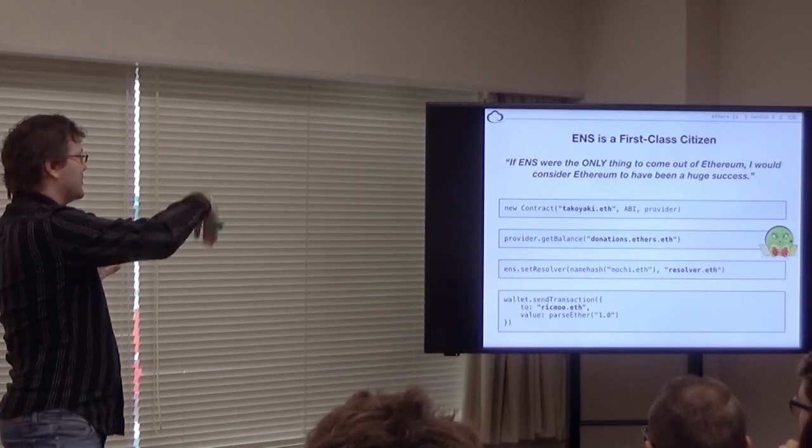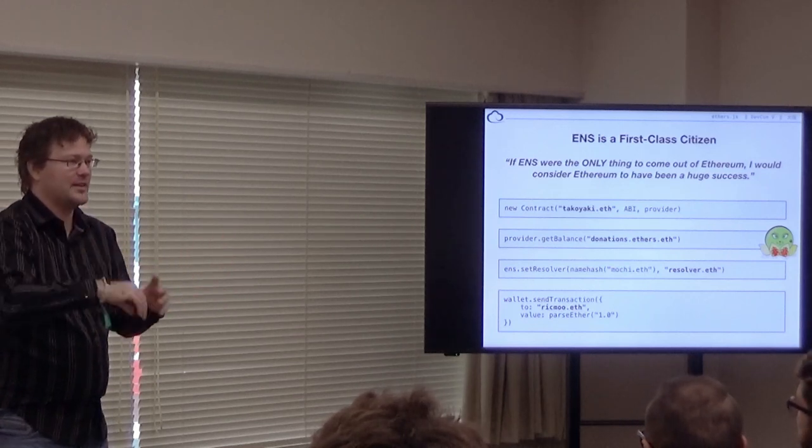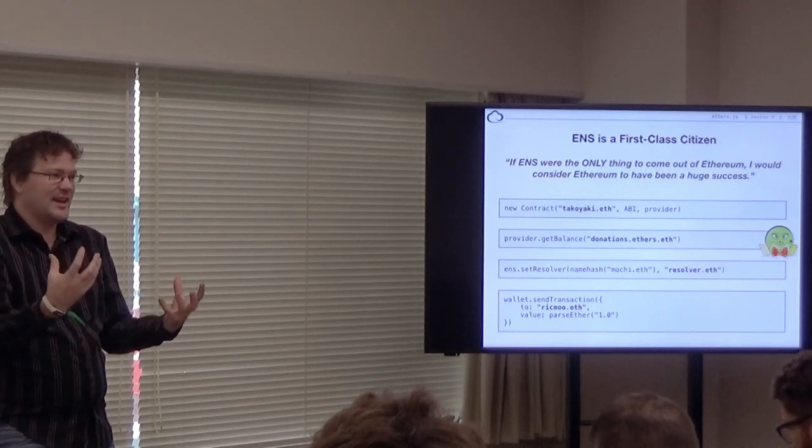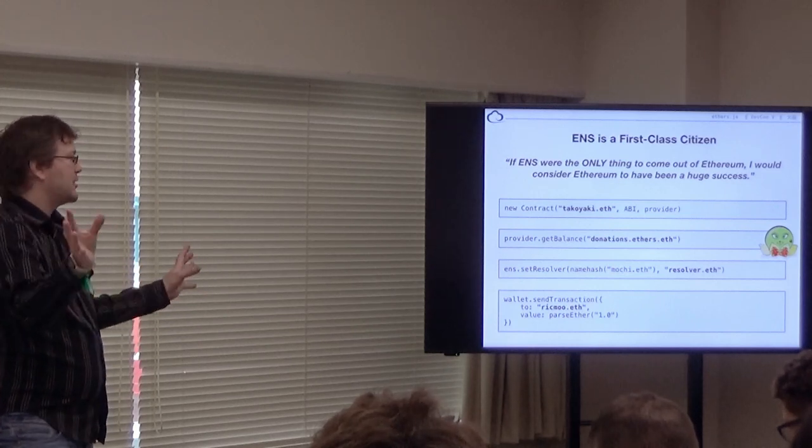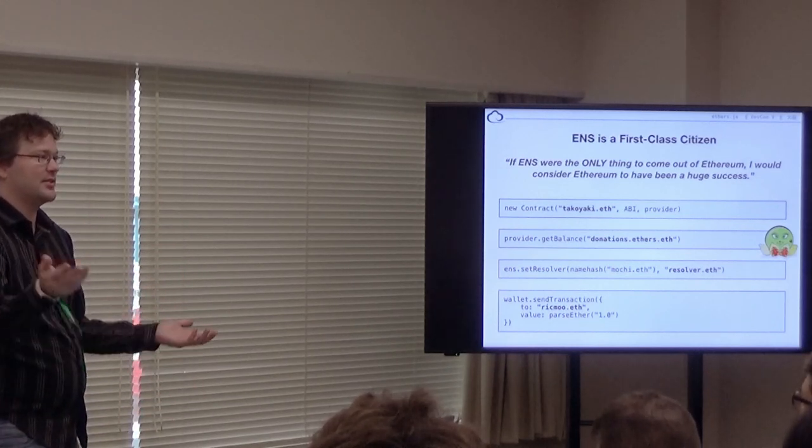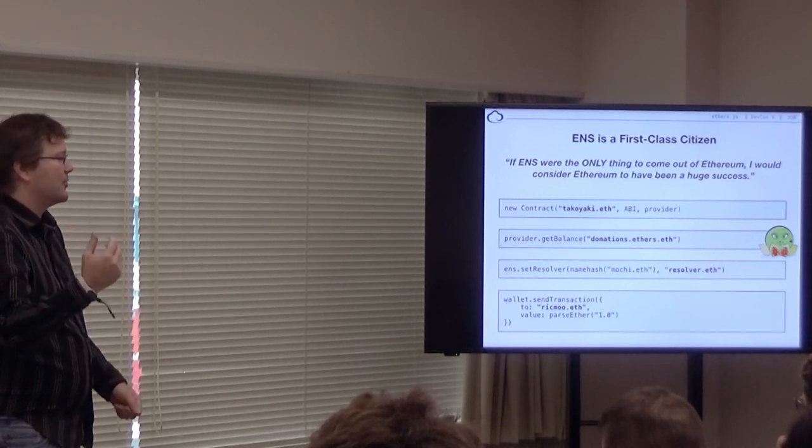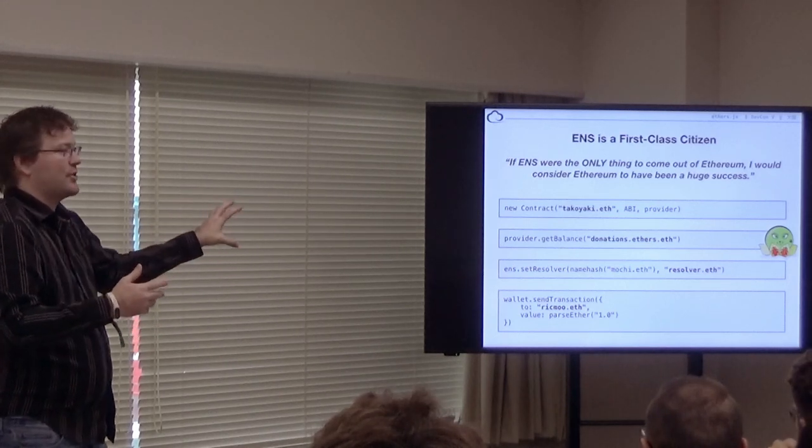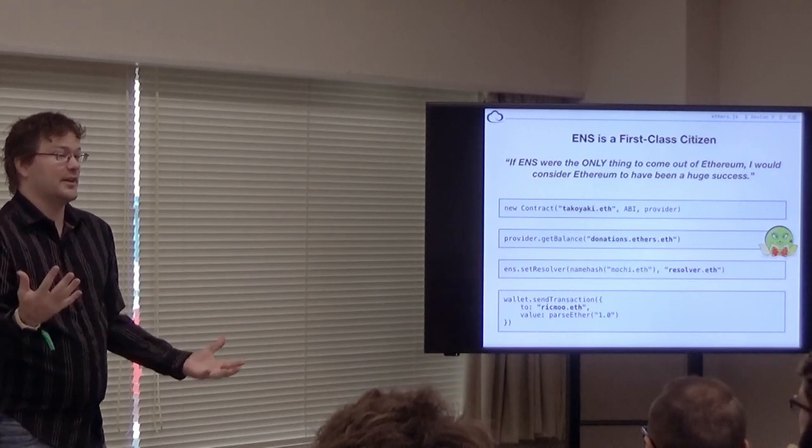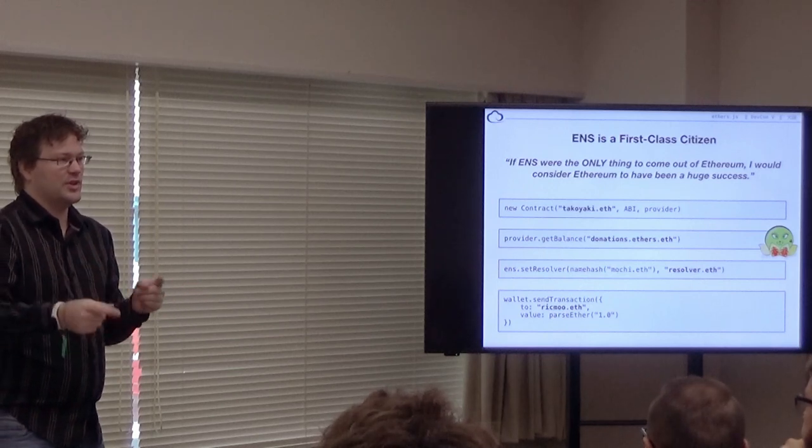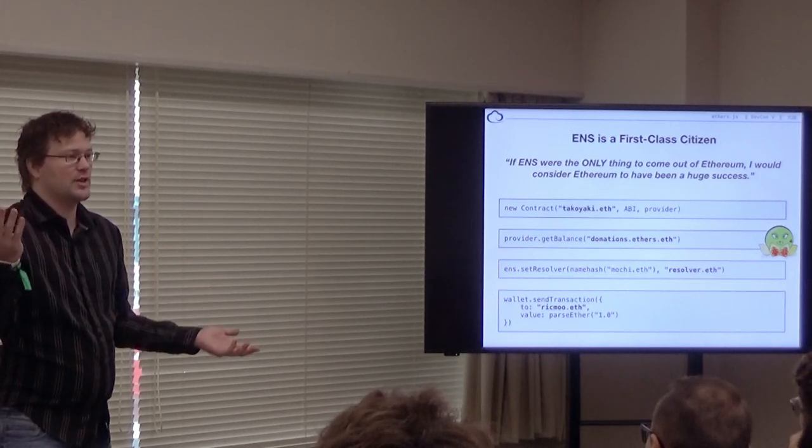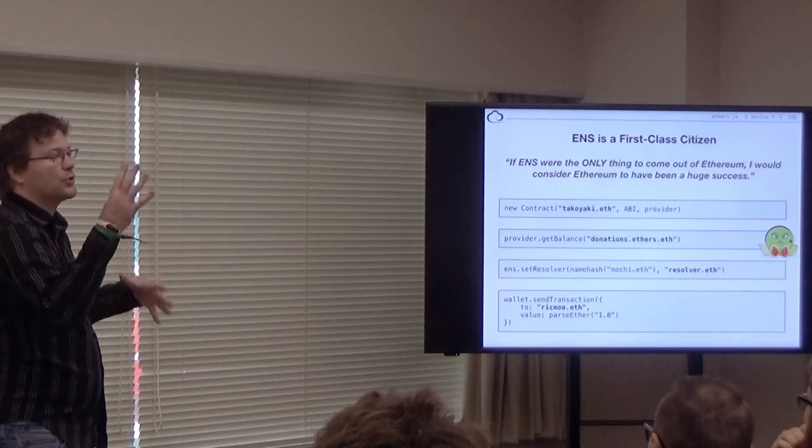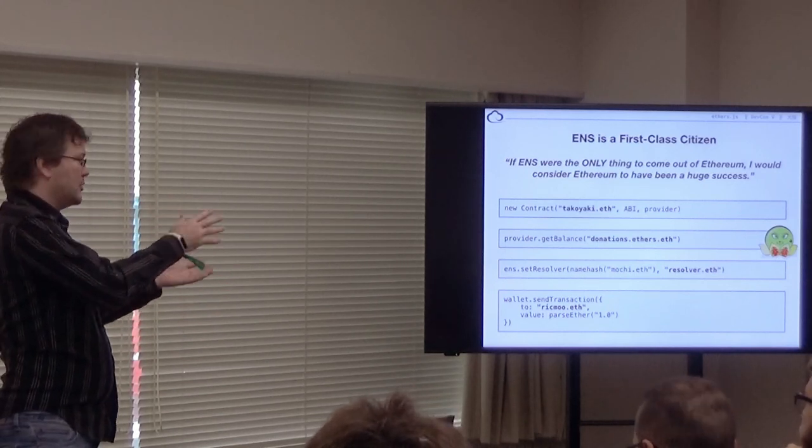ENS is a first class citizen. I think ENS is the most important thing in the entire blockchain space. Not just Ethereum. There's so many problems in how the internet works today. You have to trust every CA, otherwise you're compromised. ENS solves all these problems. ENS is a first class citizen in ethers. It always has been since version 2. For example, you can use tappup.eth, which is one of our contracts, as the address for the contract. When you instantiate this, it'll look it up. The cool thing is when we upgrade our contract, we just upgrade the ENS and all of our software continues to work. We don't have to change anything. Anywhere in ethers you can use an address, you can use an ENS name.